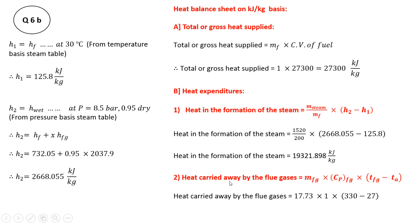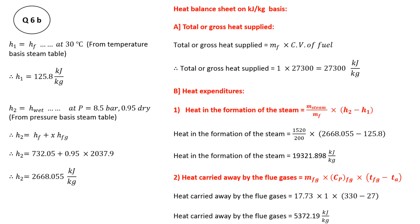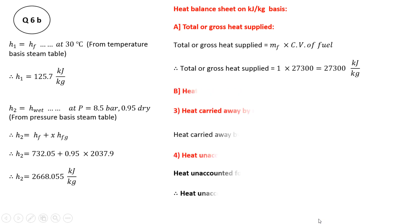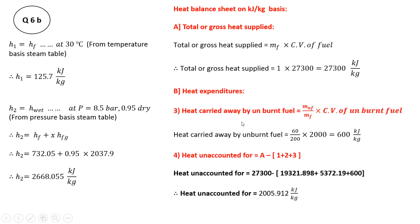Next, we find the heat carried away by the flue gases using Q = m·cp·ΔT. Mass of flue gases is already given per kg of fuel burned as 17.73 kg, cp of flue gases is 1 kJ/kg·K, and temperature difference is (330 − 27) = 303°C. So heat carried away by flue gases = 17.73 × 1 × 303 = 5372.19 kJ/kg.